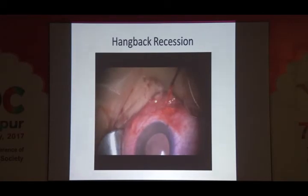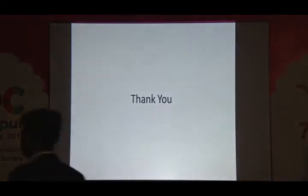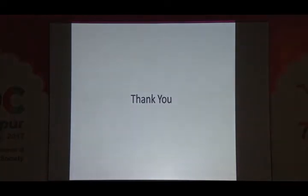Sometimes you can do a hemi hangback recession, whereby you pass it closer to the sclera rather than hanging back by the entire length of six or seven millimeters. You could hang it back by two or three millimeters, passing through that portion of the recession. That pretty much covers the recession. There are other things, like recession with Faden, but for want of time I will stop here.